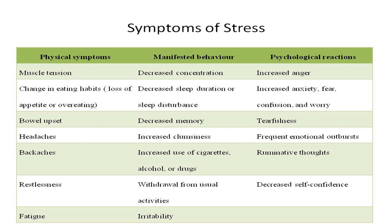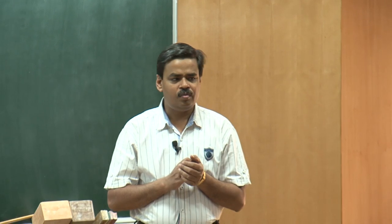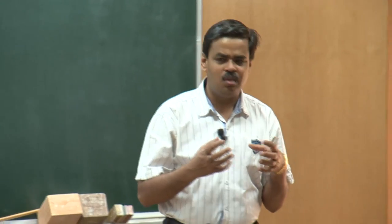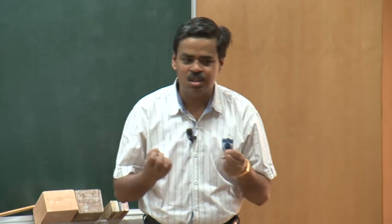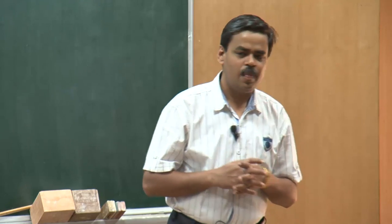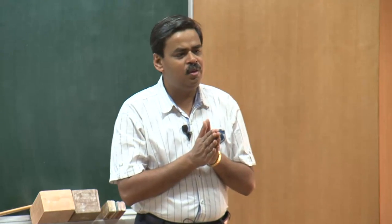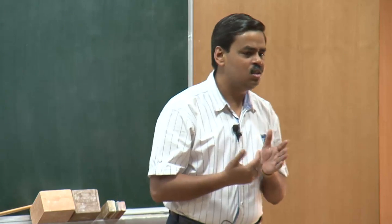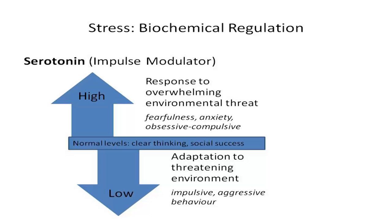One important factor we realize looking at the whole set of symptoms is that there is a sound biochemical regulation process. By default, if the muscle becomes tense, the stomach clenches, one has forgetfulness or inability to concentrate — all of them are guided by some type of biochemical change during stress. Today we will primarily talk about the biochemical regulation, focusing on three different chemicals in the brain: serotonin, norepinephrine, and cortisol.